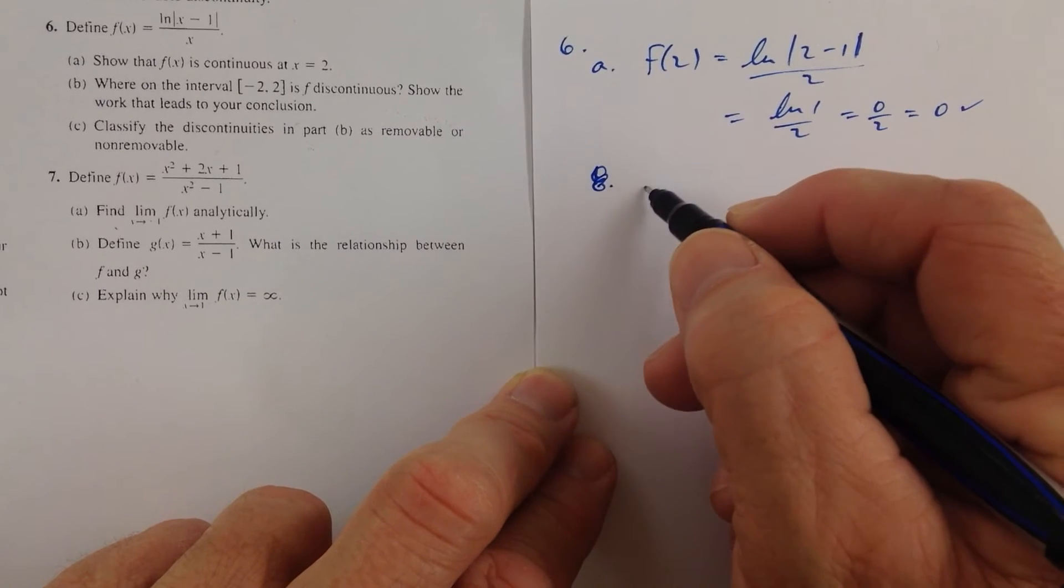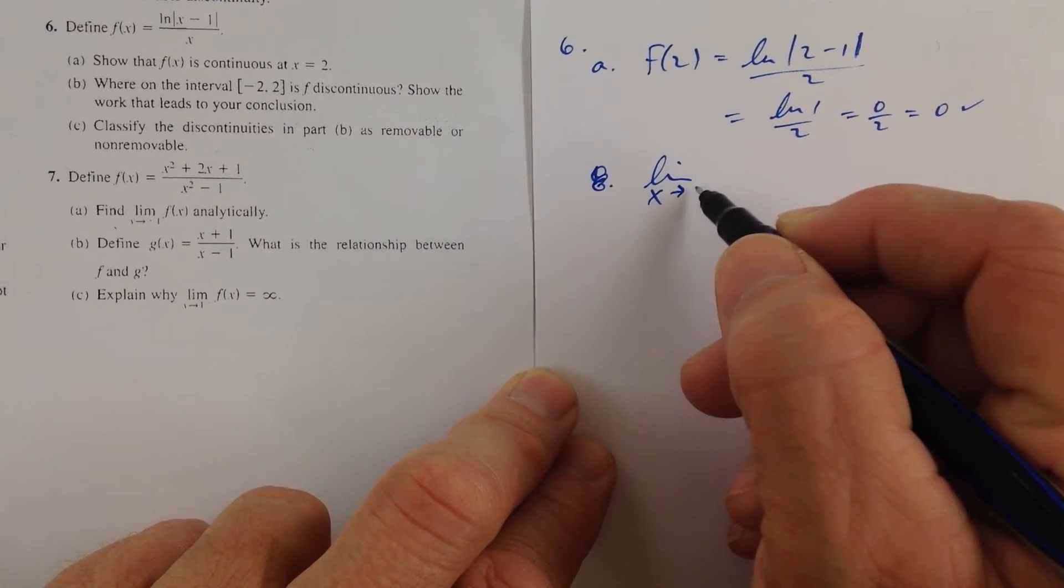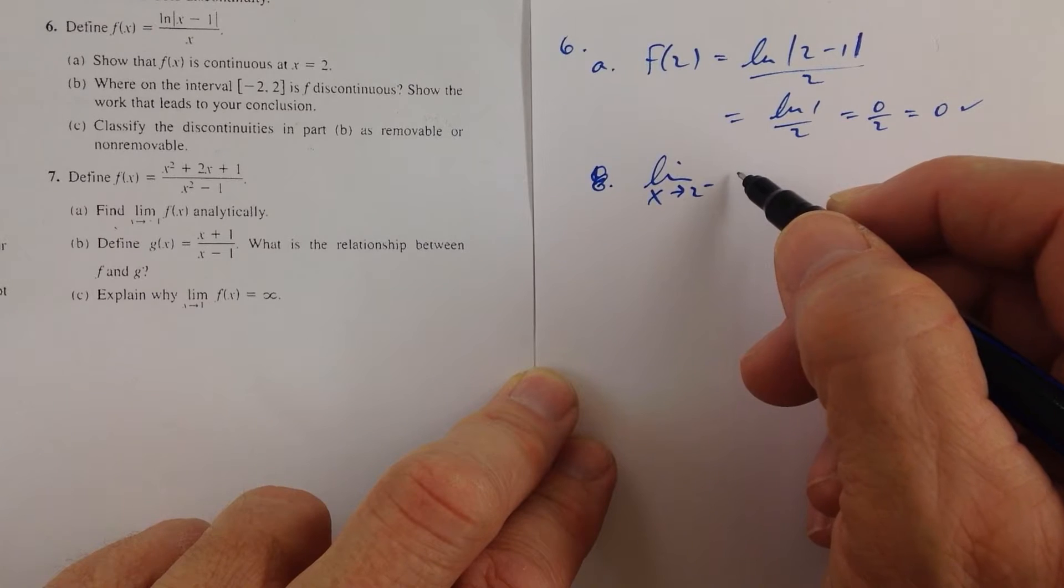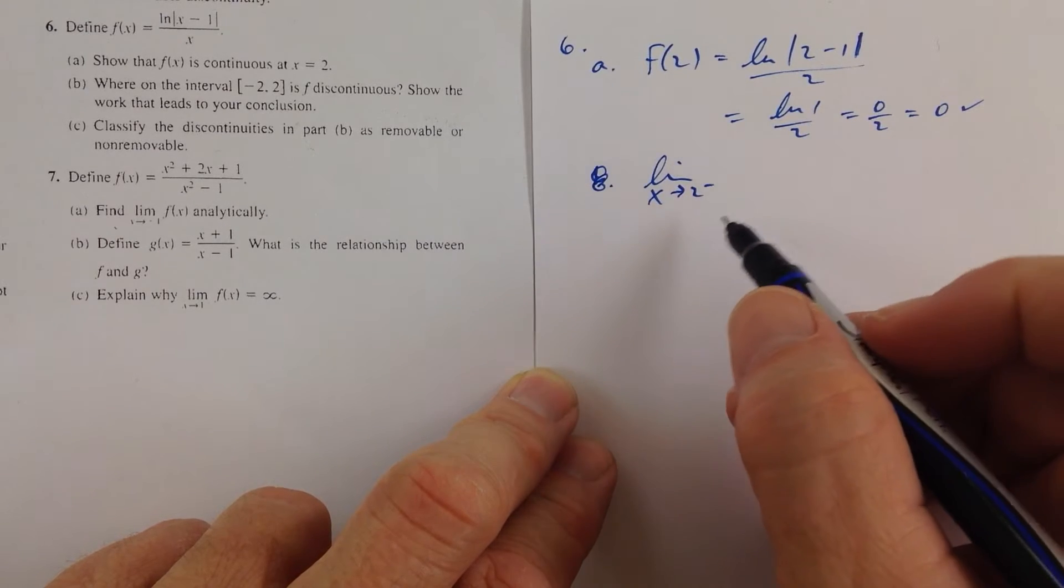Oh no, that's not part B. And then the limit as x approaches 2 from the left of, you know what, we don't need to worry about left and right.